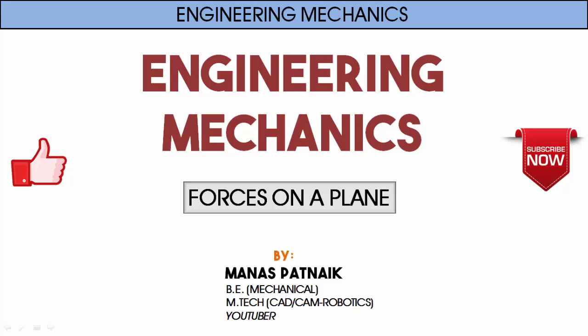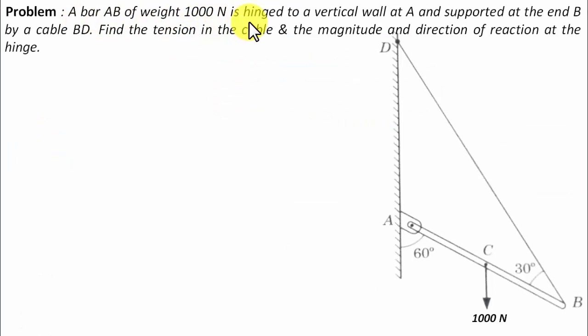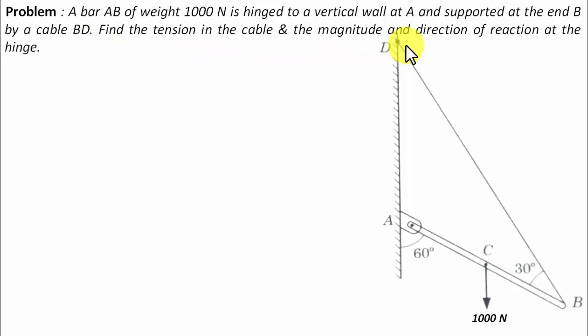Hi there guys, hope you're doing well. This is your friend and tutor Manas. A bar AB of weight 1000 Newton is hinged to a vertical wall at A and supported at the end B by a cable BD. Find the tension in the cable and the magnitude and direction of reaction at the hinge.